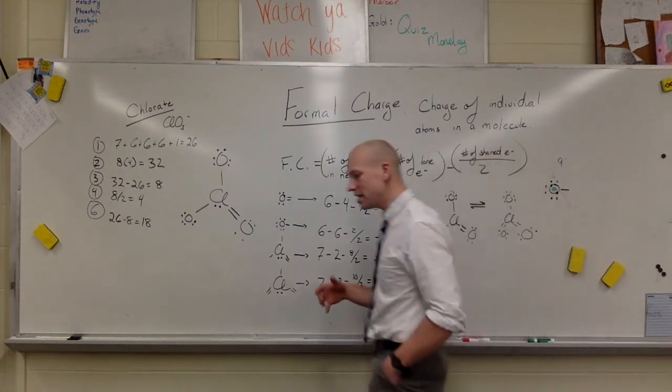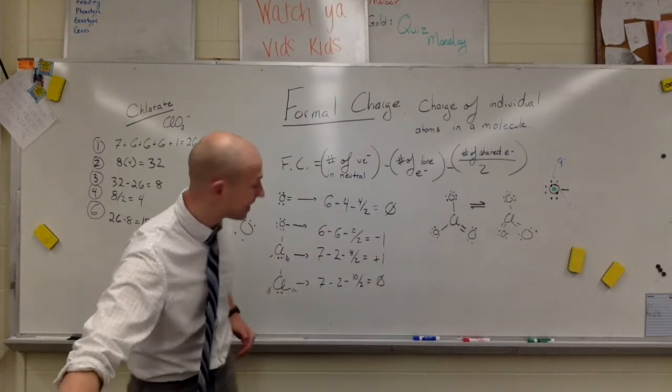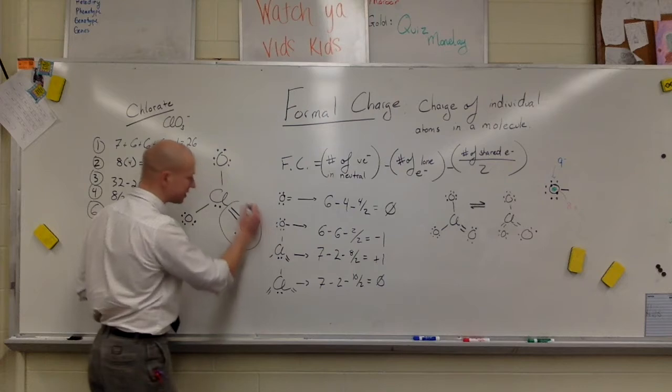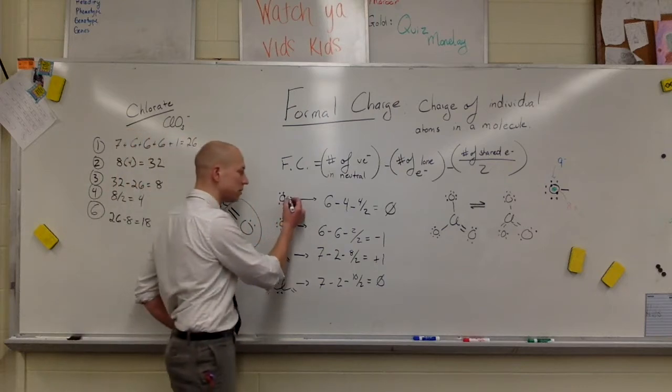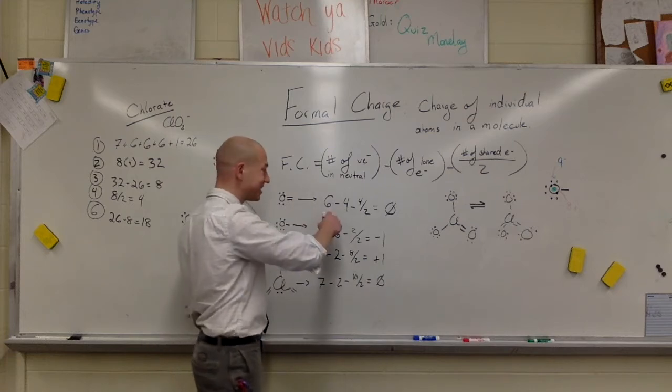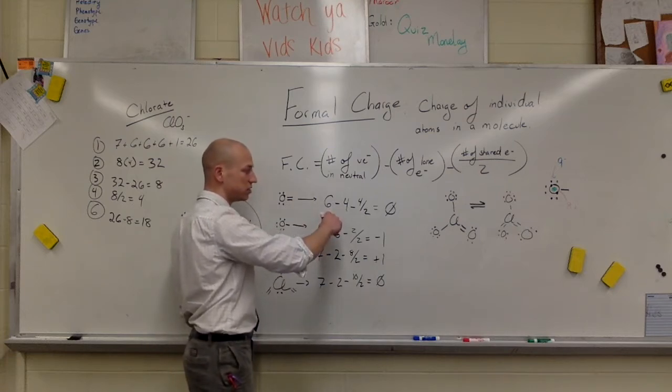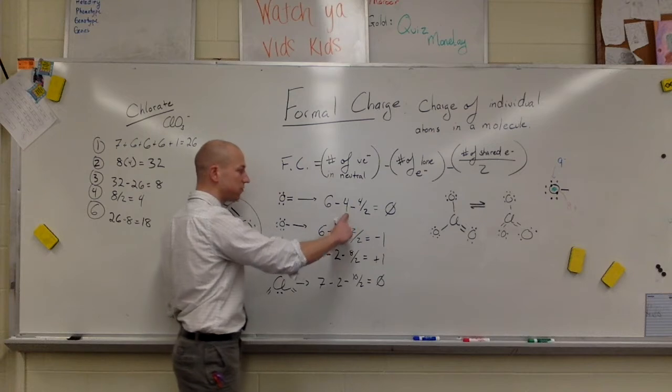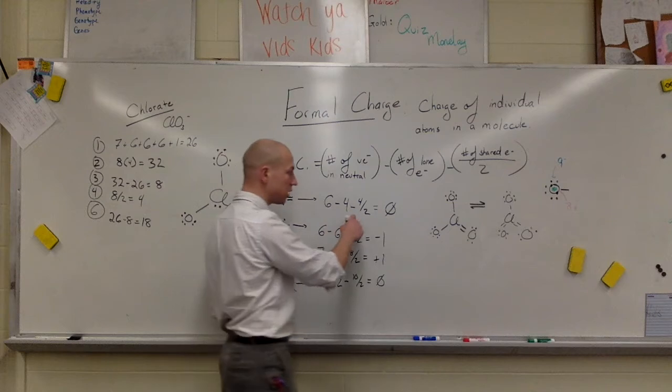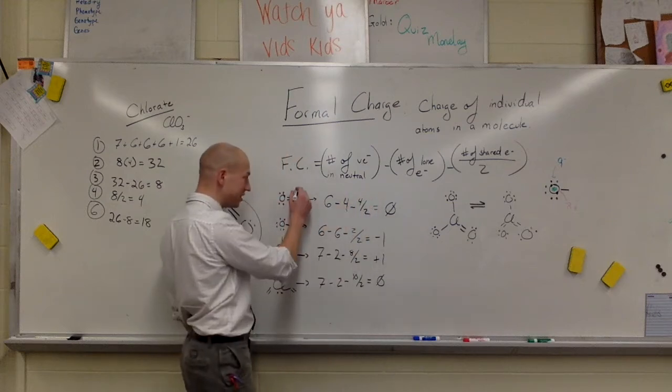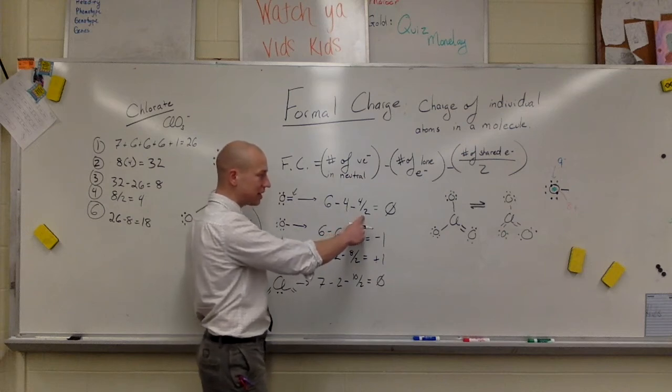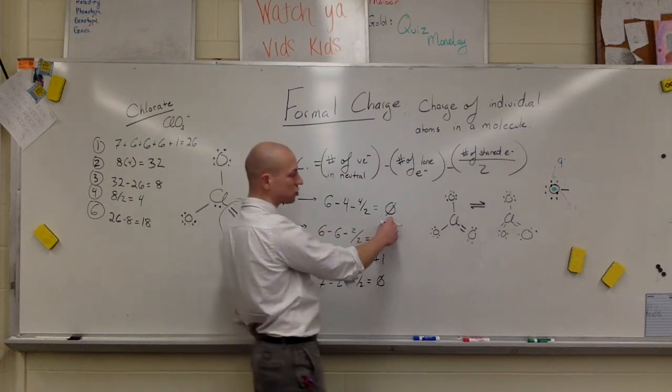We look at each individual atom inside and how it's bonded. So here we've got an oxygen that is double bonded to a chlorine. Oxygen with a double bond, if we follow this formula, has six valence electrons in its neutral state. We subtract the four lone electrons that we have, these four unbound electrons. Then we take the four electrons that are in this shared bond right here, we divide that by two, and we end up with a formal charge of zero.